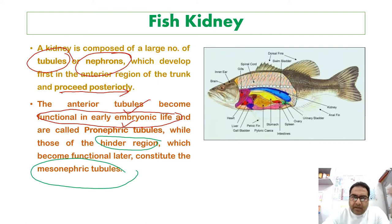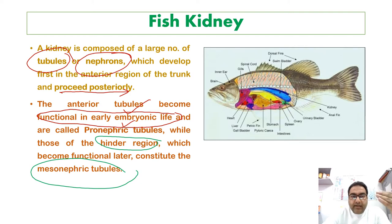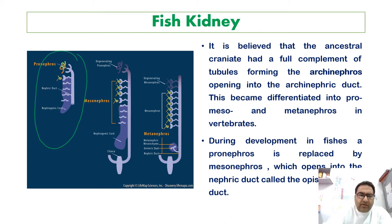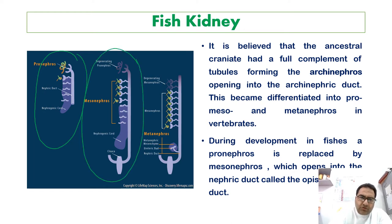The anterior part becomes functional in the embryonic stage and that is the pronephric tubule, whereas the other part becomes functional during the later stage and is known as the mesonephric kidney. We have figures here which show the pronephros, mesonephros, and the metanephric condition.